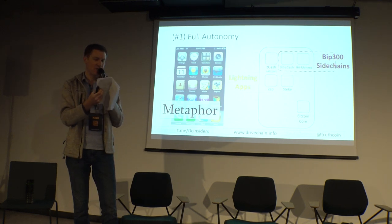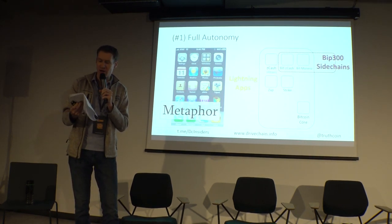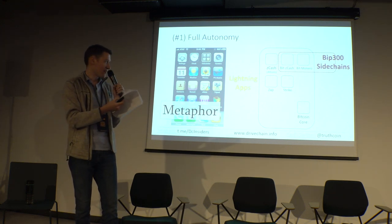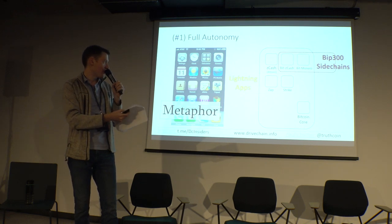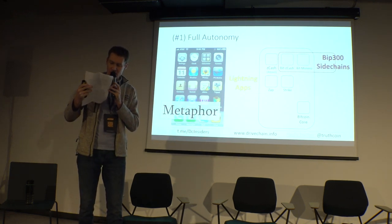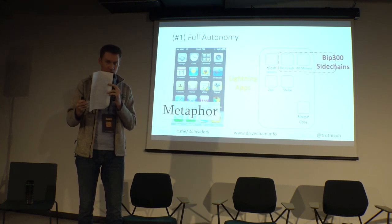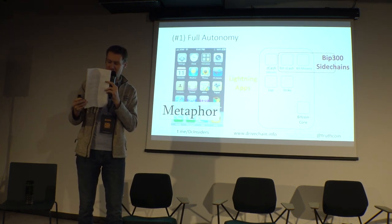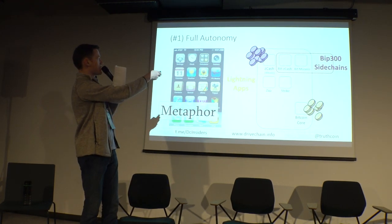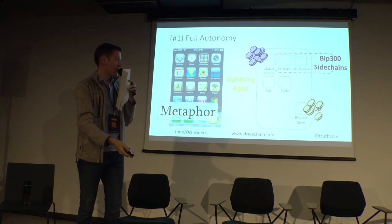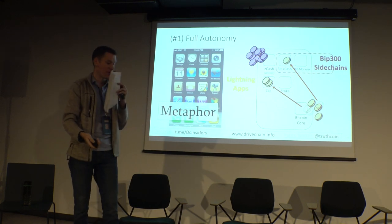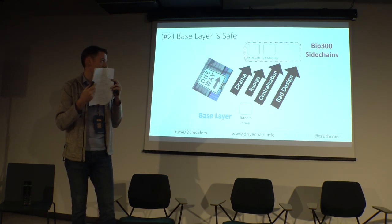The autonomy idea is that sidechains are kind of like altcoins — each sidechain has its own app, and you can change the software however you like. I have this iPhone metaphor where you have Lightning apps and then you have the sidechains. You can have a large block size, Turing completeness, ring signatures. Here the purple altcoins are Zcash, and you move coins over there the same way you'd move coins to the Lightning network. And sometimes the coins come back.